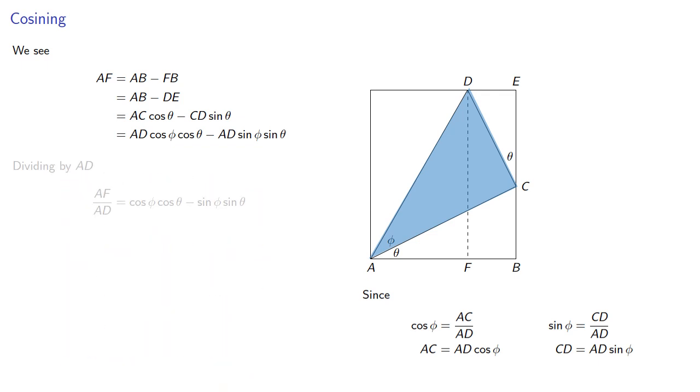Dividing by AD, and since the cosine of phi plus theta is AF over AD, we have our relationship which suggests...